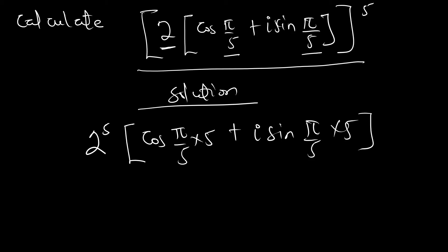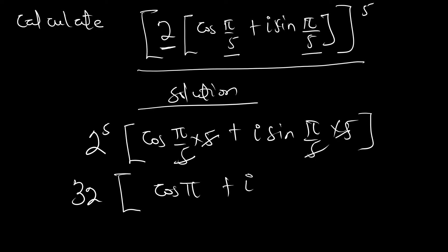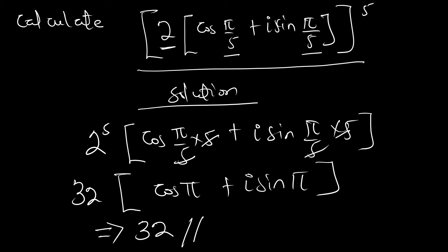2 to the power 5 gives us 32. The π/5 and 5 cancel, giving us cos(π) + i sin(π). If we want this in rectangular form, we have 32 times cos(π), and since cos(π) = -1 and sin(π) = 0, the answer is -32 in the polar or rectangular form.